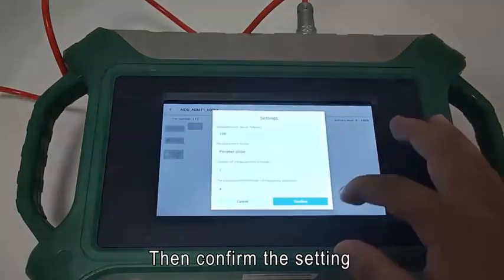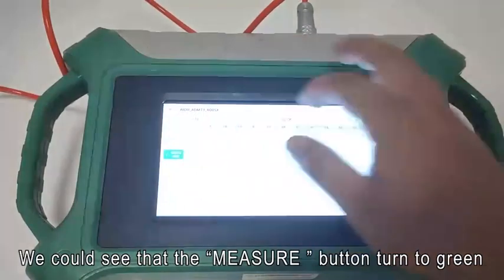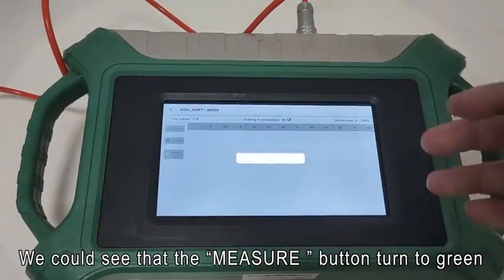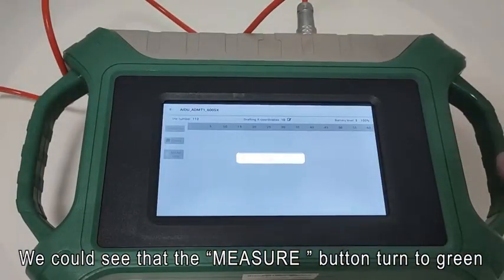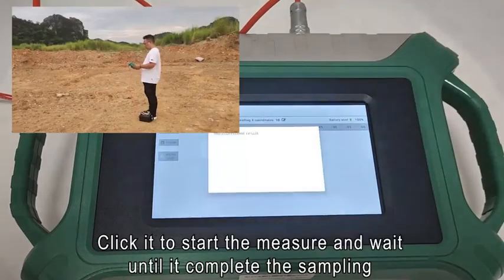Then confirm the setting. Then we go to measurement interface. We could see that the measure button turns to green. Click it to start measure and wait until it completes the sampling work.